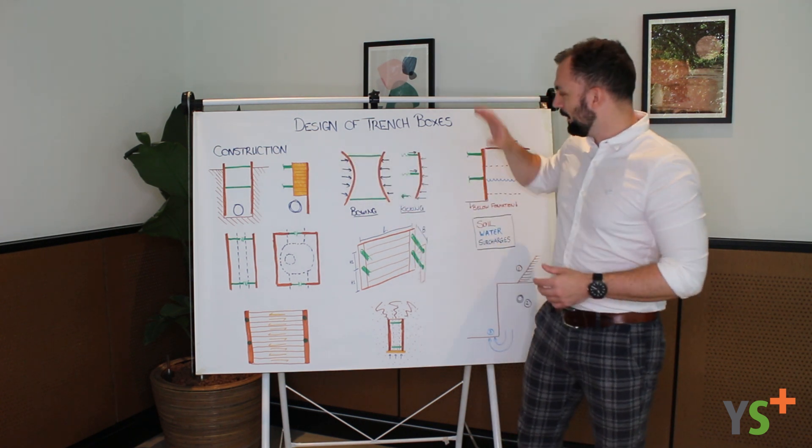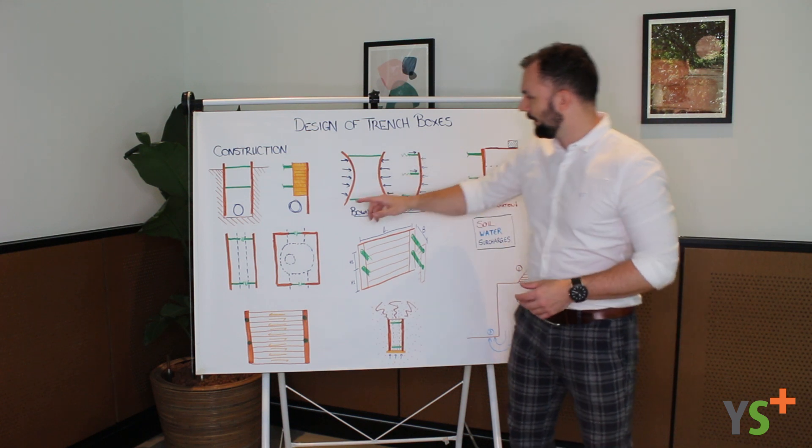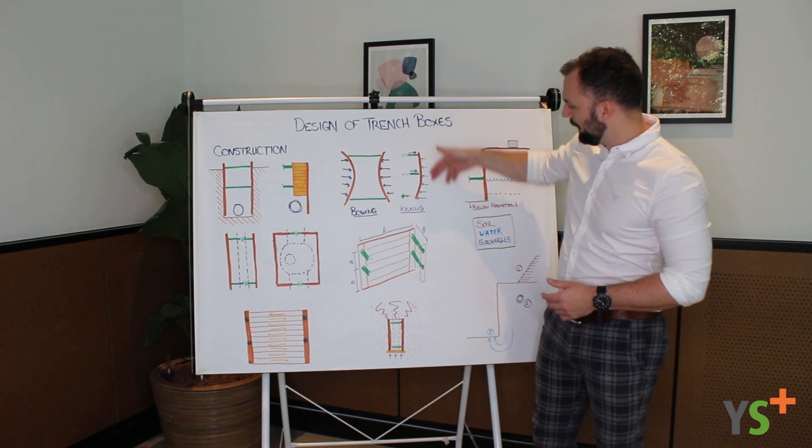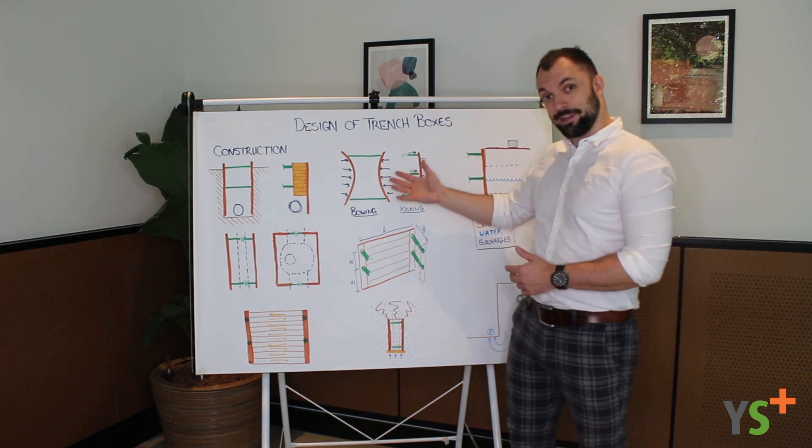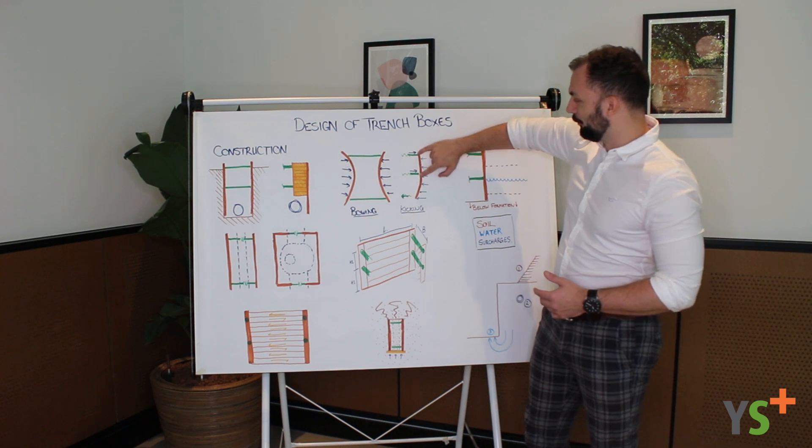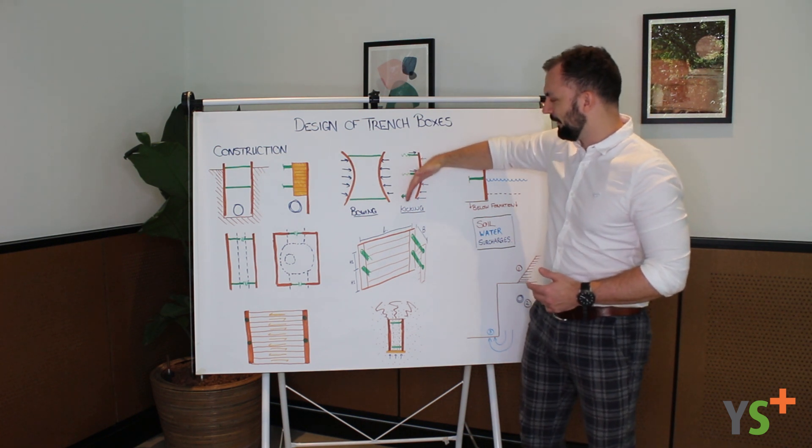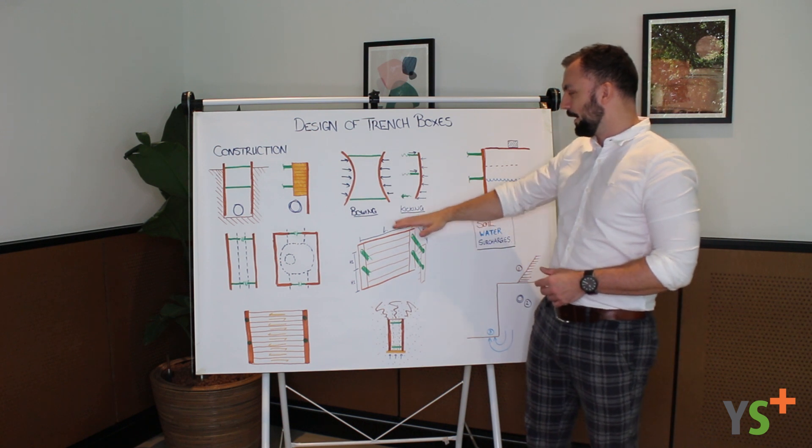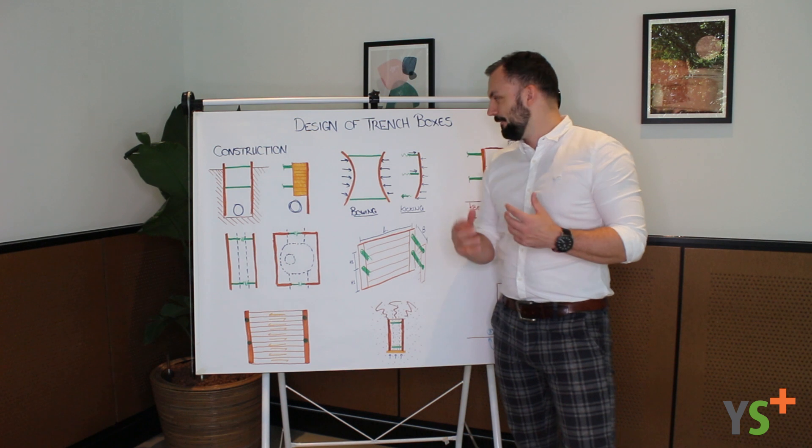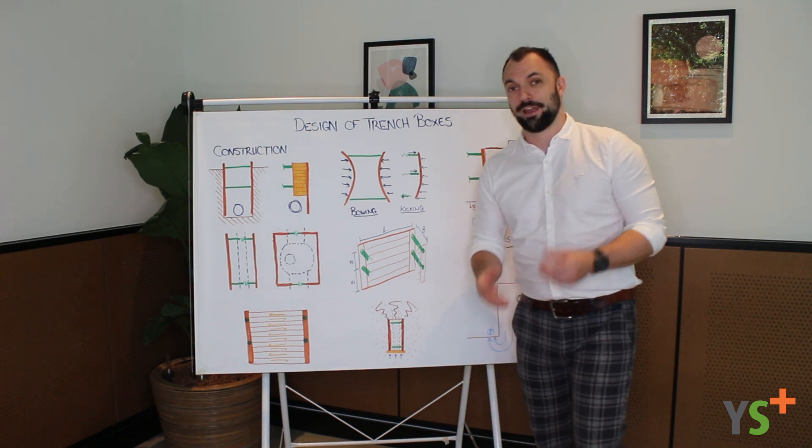If you're looking in the section view now, where again we've got the two struts at the top, we've got the soil pressure coming on. The base of this box wants to kick in and come inside, and these struts are holding it up, but the bending strength of the panel itself wants to resist what we call kicking moment. Those are the two main effects on the box that we calculate.